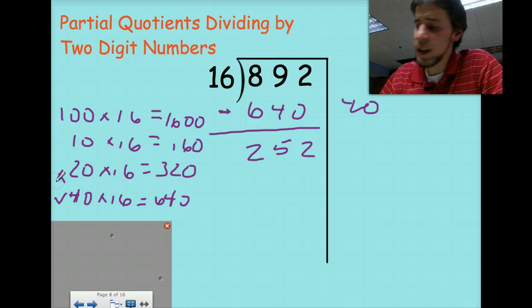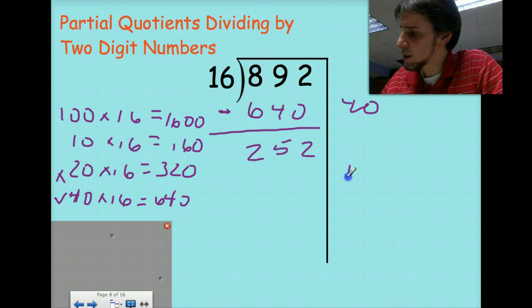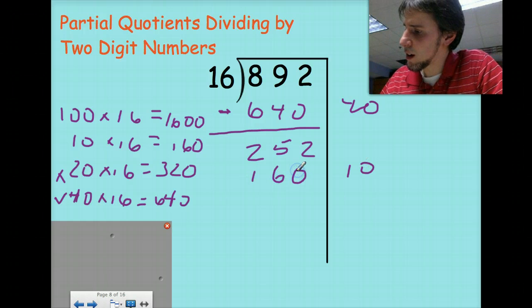I don't need to use twenty times sixteen because that's going to be too much, three hundred twenty. I don't need... well, let's start doing the tens. So hundred and sixty, throw that in there. Check that off my box.